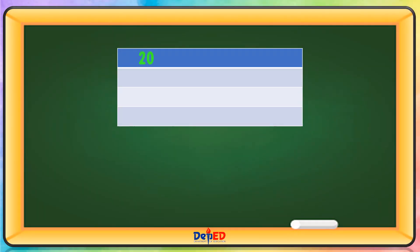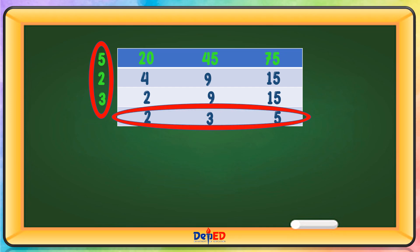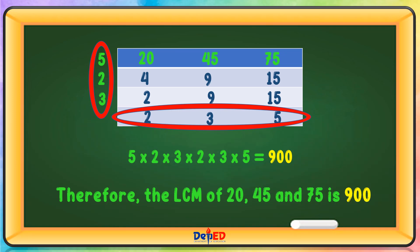We have 20, 45, and 75. Using prime number 5: 20 divided by 5 equals 4, 45 divided by 5 equals 9, 75 divided by 5 equals 15. Using prime number 2: 4 divided by 2 equals 2; 9 is not divisible by 2, so bring it down; 15 is not divisible by 2, so bring it down. Using prime number 3: 2 is not divisible by 3, so bring it down; 9 divided by 3 equals 3; 15 divided by 3 equals 5. Multiply: 5 times 2 times 2 times 3 times 3 times 5 equals 900. Therefore, the LCM of 20, 45, and 75 is 900.